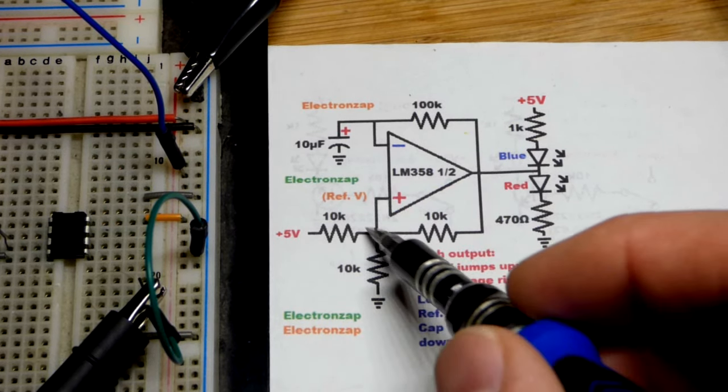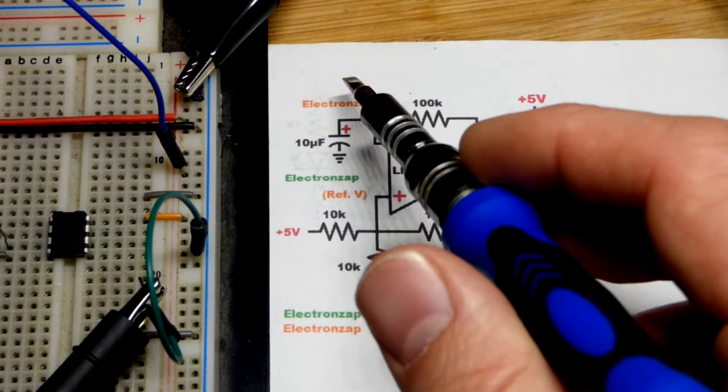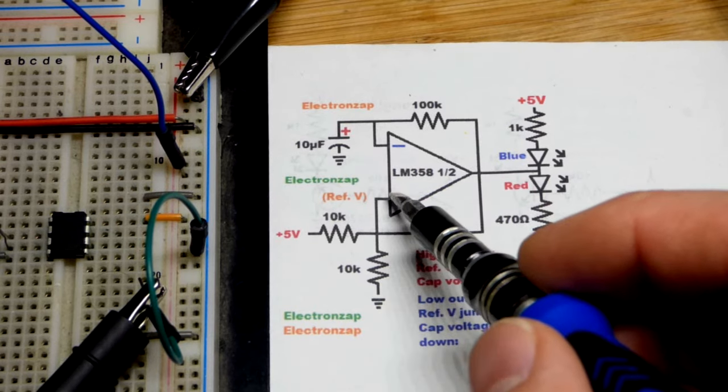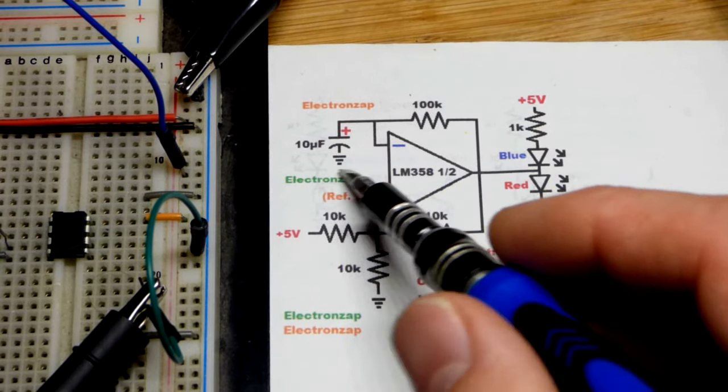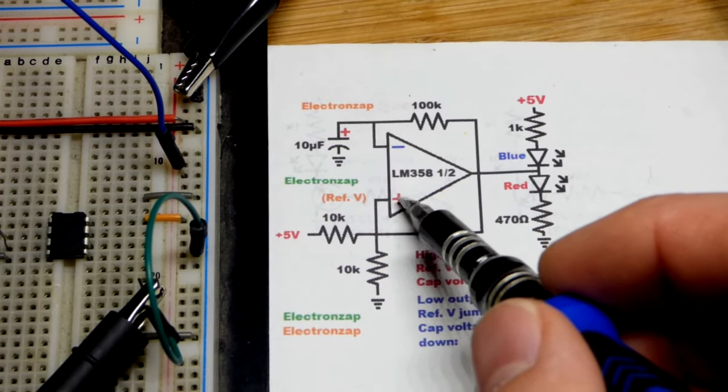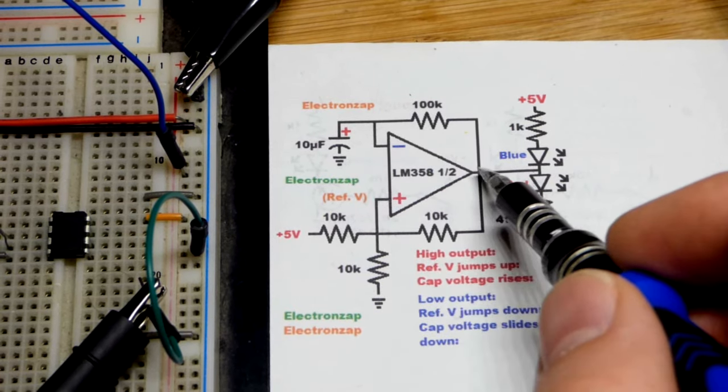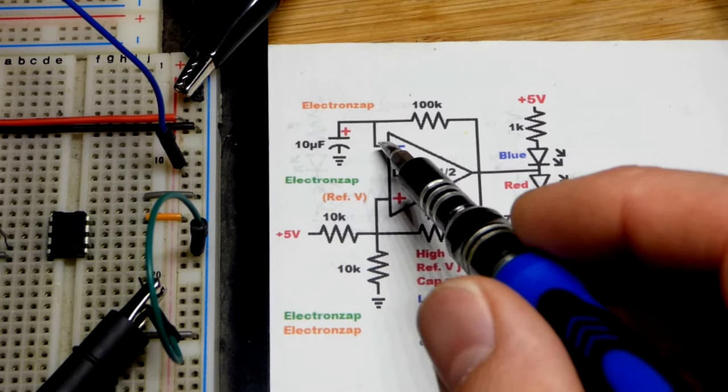But yeah it raised the voltage when the output was high and would charge the capacitor until the capacitor got up to the voltage we got set there. Then the output would go low, drop in that voltage, discharging the capacitor until it got to the lower voltage of that one. Because the output always wants to be more like this input than that input.